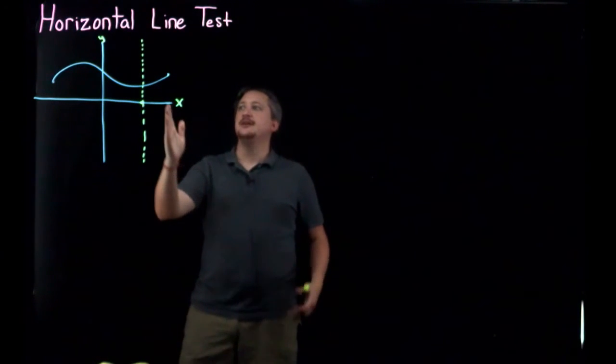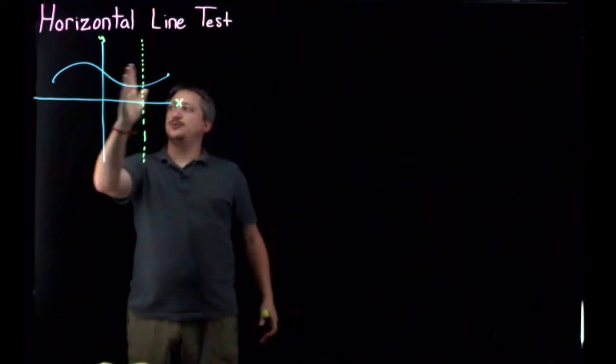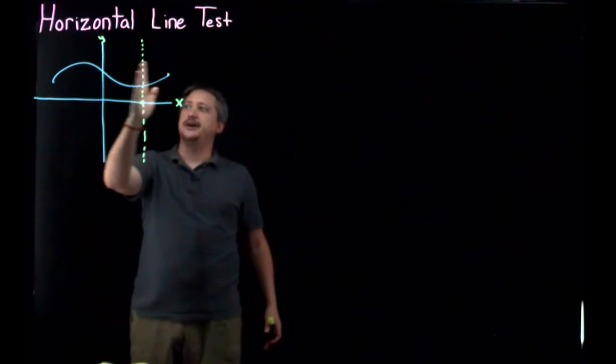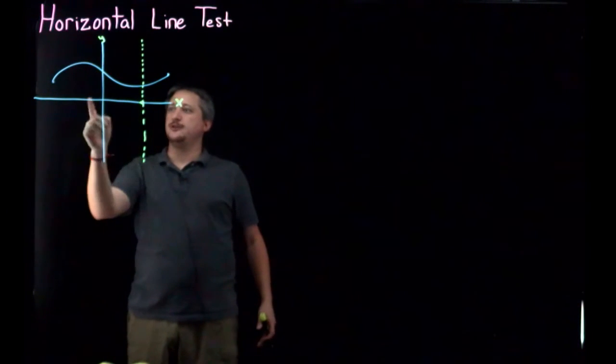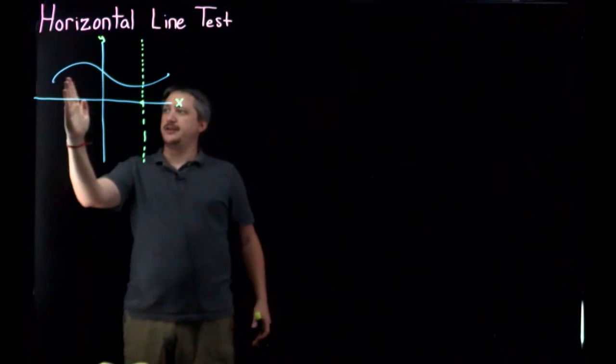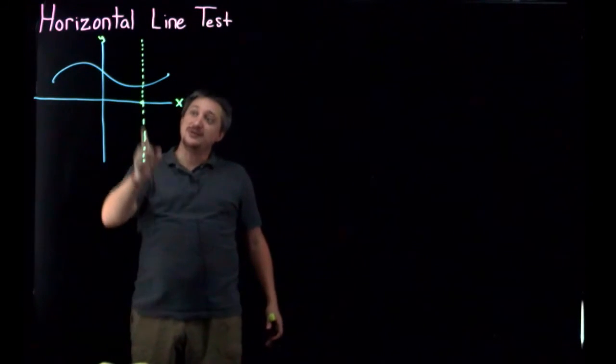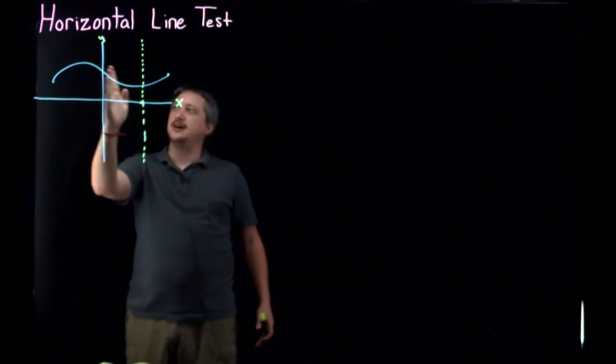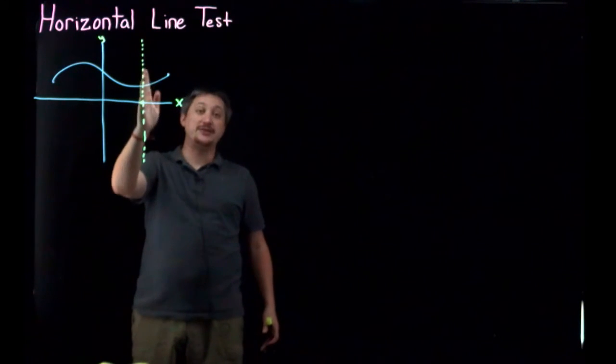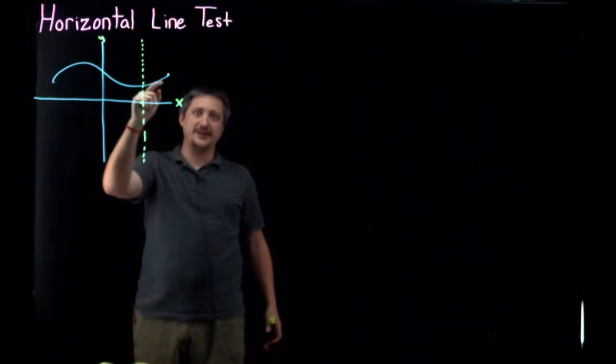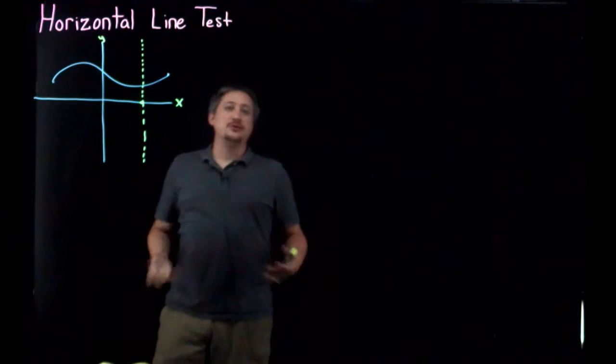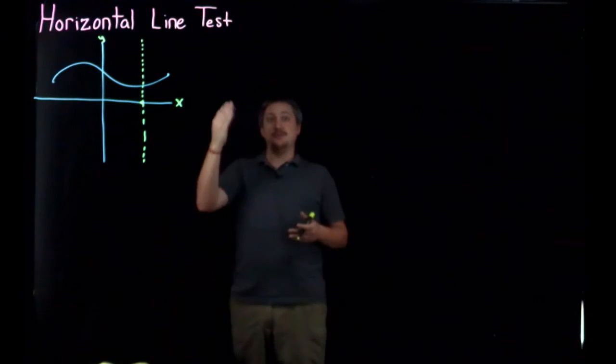And so the vertical line test told us that we wanted to go scanning left to right with a vertical line, because what we're doing is we're checking all the inputs by going left to right, and we're checking all of the associated outputs to that input by using the vertical line. If we hit the graph with the same vertical line more than once, that told us it couldn't be a function, because that input had multiple outputs.